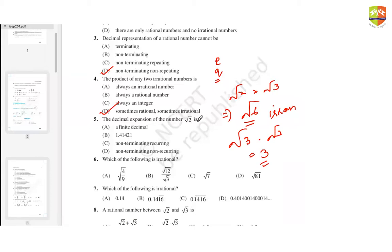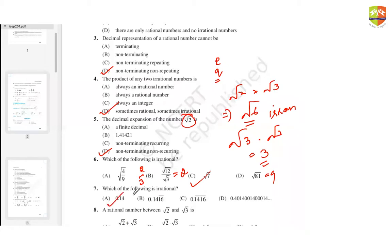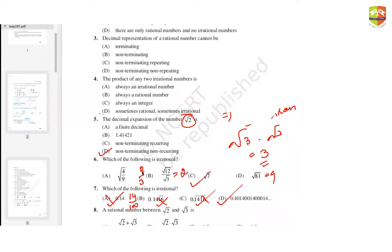The decimal expansion of root two is non-terminating non-recurring because it is an irrational number. For identifying which of the following is irrational: root four by nine gives two by three, root 12 by three gives two, and the number with a bar above it means the same digit repeats — like 0.14 written as 14 by 100 is rational. But root seven shows no proper repetition, so it is irrational.